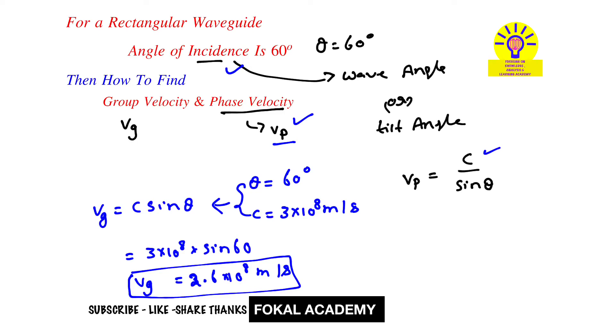C is the velocity of light, 3 times 10 to the power 8, divided by sine 60. By simplifying this, we get 3.46 times 10 to the power 8 meters per second. This is the phase velocity for the given problem.